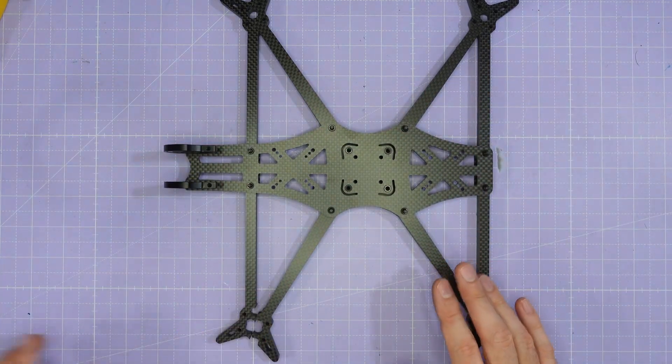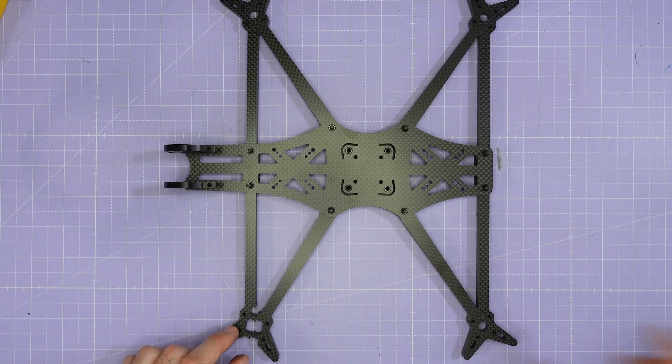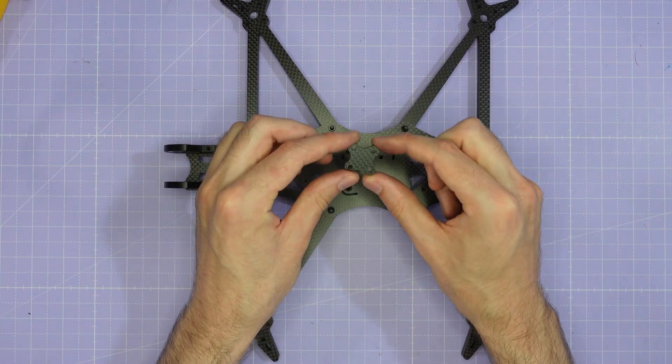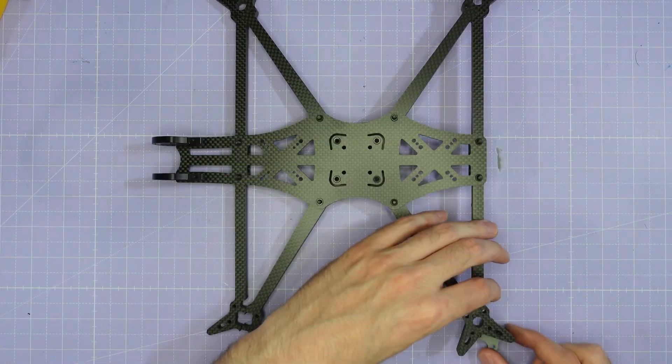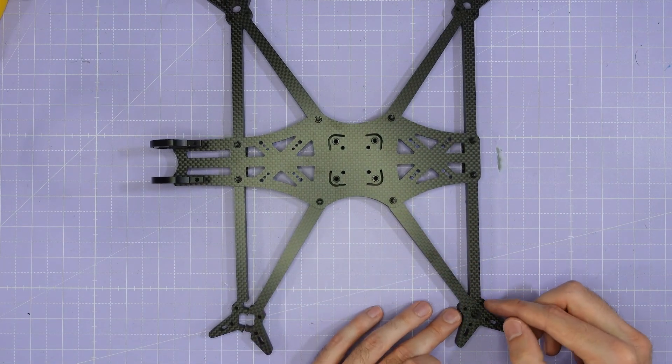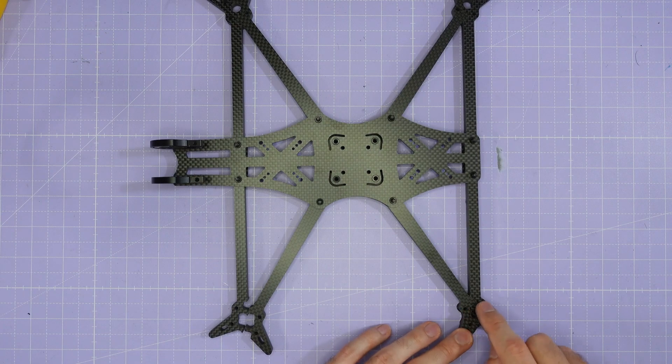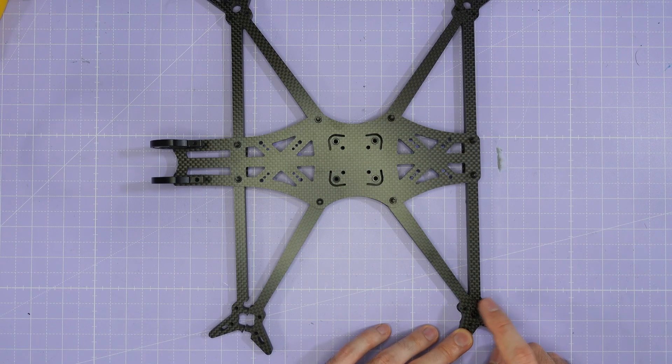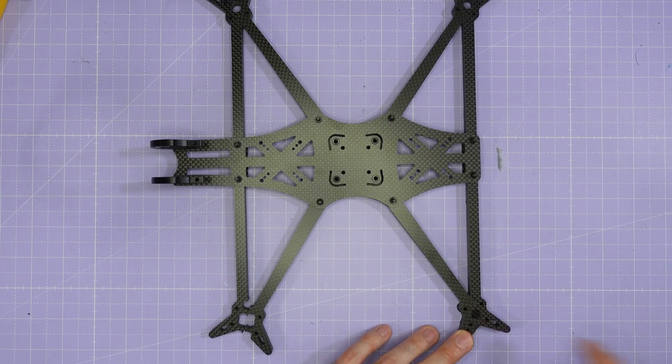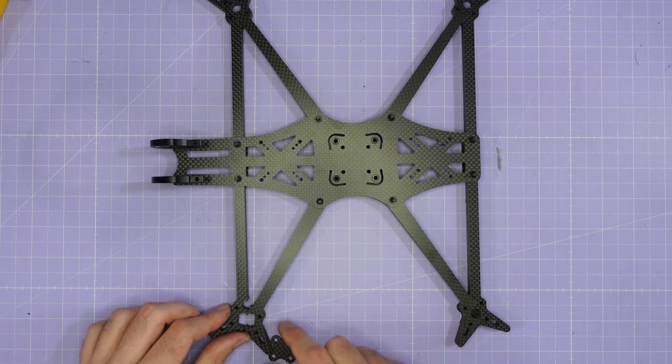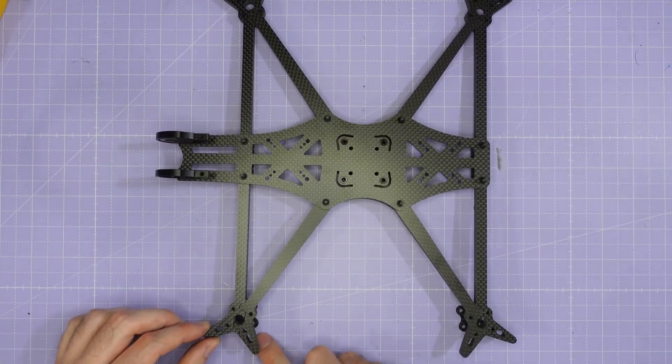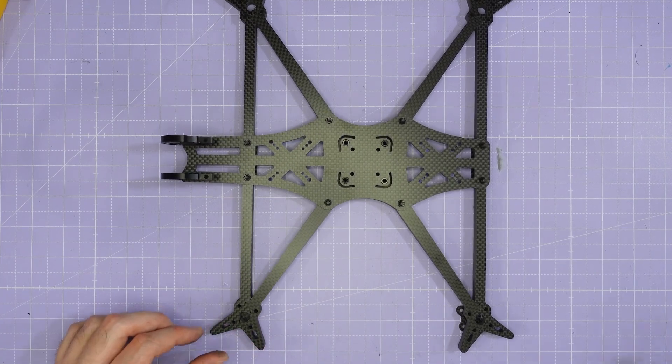When you're installing the motors you are going to want to use the motor brace plates underneath the arms so these little motor braces go underneath each arm and then you pass your motor screw up through that brace plate and then up into the motor. You need quite long motor screws for this so the cap head motor screws are provided with the frame. You're going to use four of those little brace plates to make sure that the arms are really securely fastened together once your motors are installed.